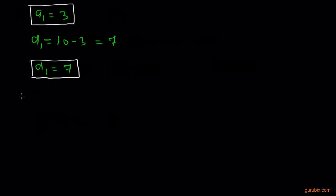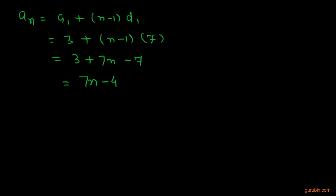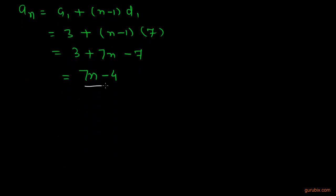Now we easily find the nth term of this second AP. That is aₙ equals a₁ plus (n minus 1) times d₁. And a₁ is 3, n we don't know, and d₁ is 7. Now we can calculate this. This is 3 plus 7n minus 7, and that equals 7n minus 4. So the nth term of the second AP is 7n minus 4.